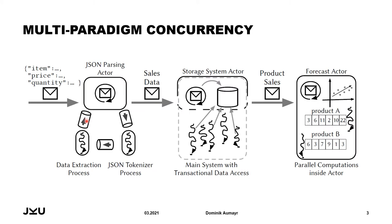On this slide, you can see a multi-paradigm concurrent application that processes sales data and then predicts future sales. It is built from a number of subsystems. Each subsystem is encapsulated by an actor, and the actor then uses another concurrency model to do the actual processing. In the first subsystem for JSON processing, we use communicating sequential processes to build a pipeline. In the storage system actor, we use a number of transactions. And in the forecast actor, predictions for individual products are parallelized using fork-join.